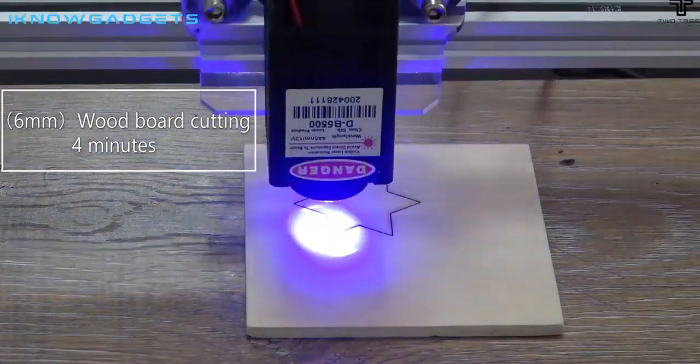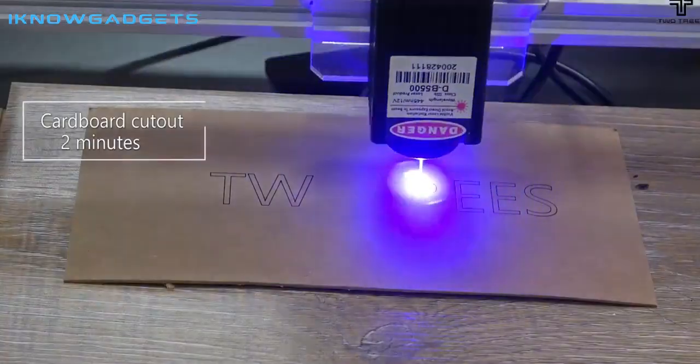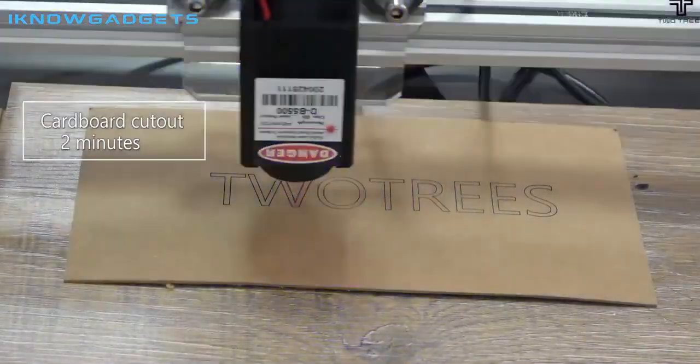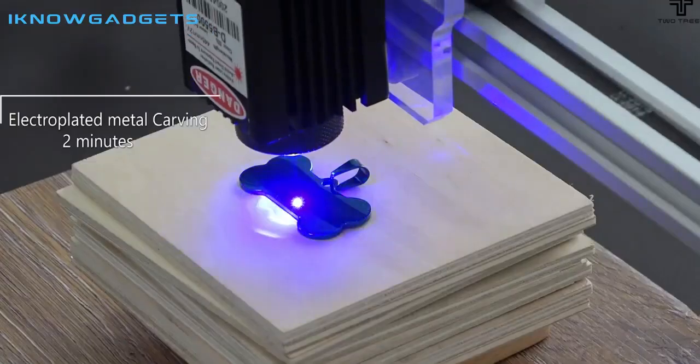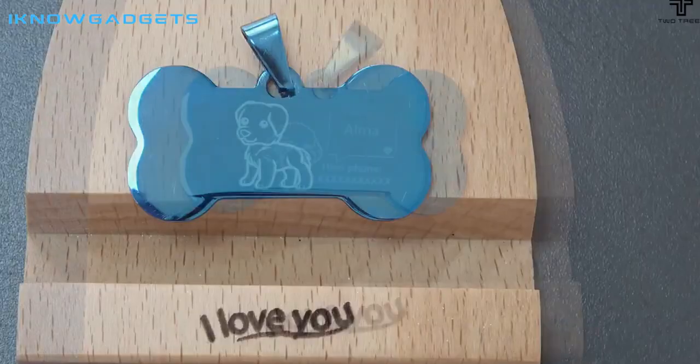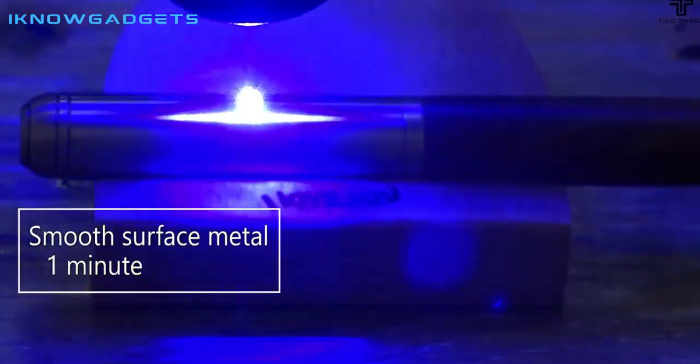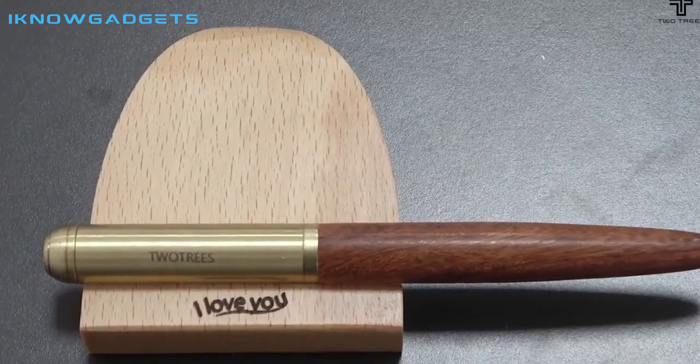We'll also show you how to get the most out of the machine so you can start laser engraving and cutting quickly and easily. If you're looking for a great machine to help you with your DIY wood engraving projects, then the TT 2.5 Laser Engraver Machine is definitely worth checking out.